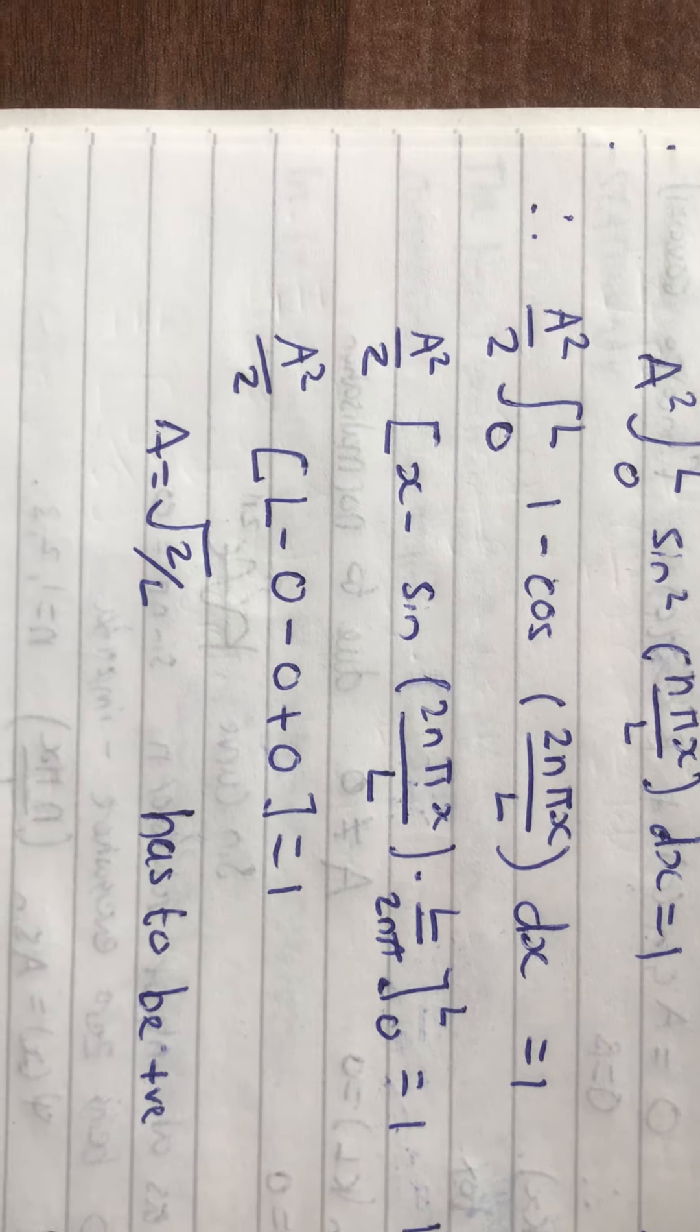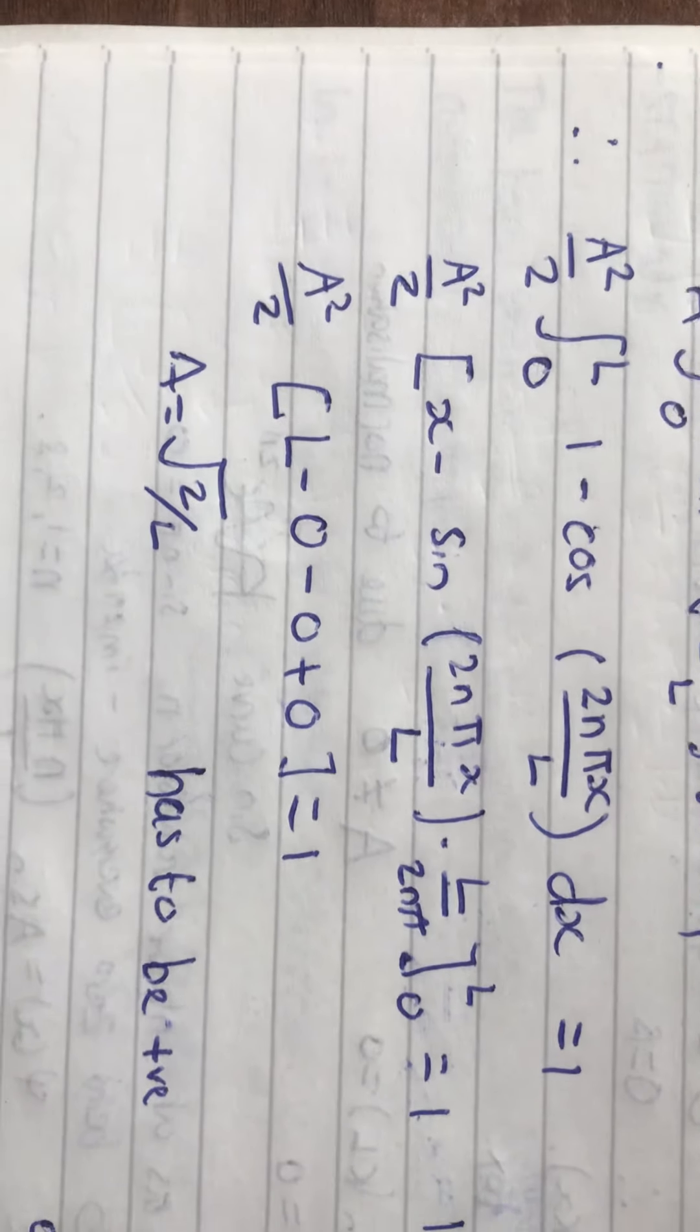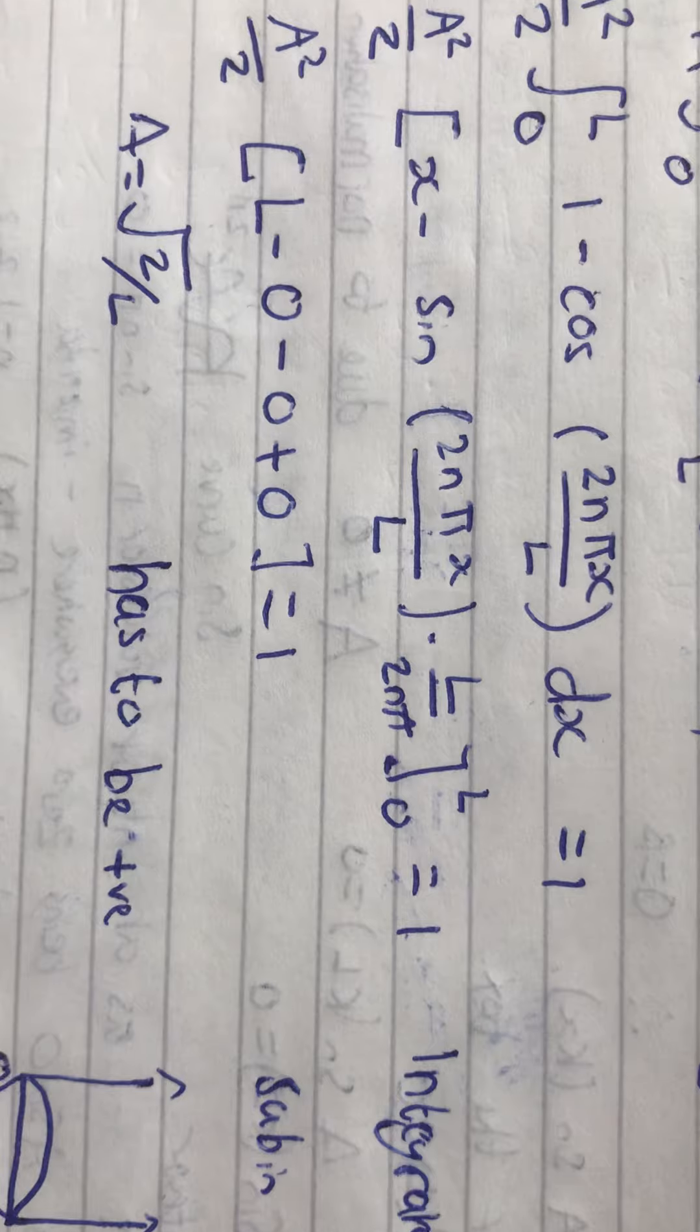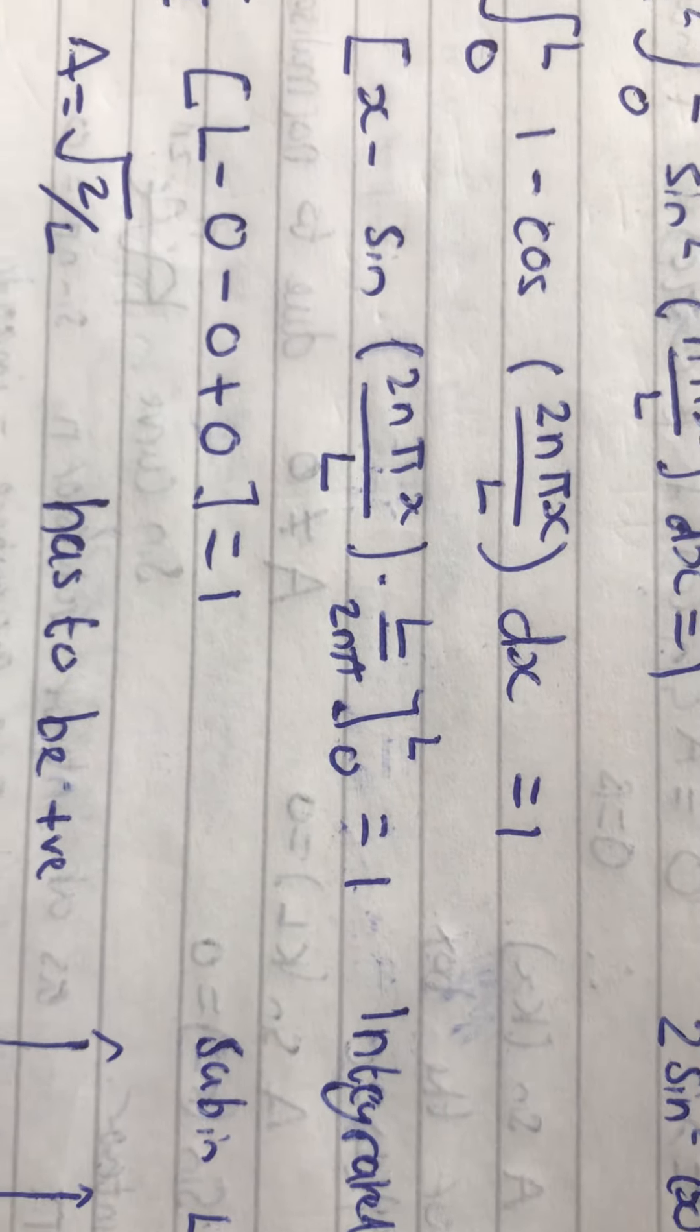We've got a squared over 2 is then equal to, if we plug in L, you get that, L minus 0, minus 0 plus 0. Because, when we sub 0, we'll get 0 for all.